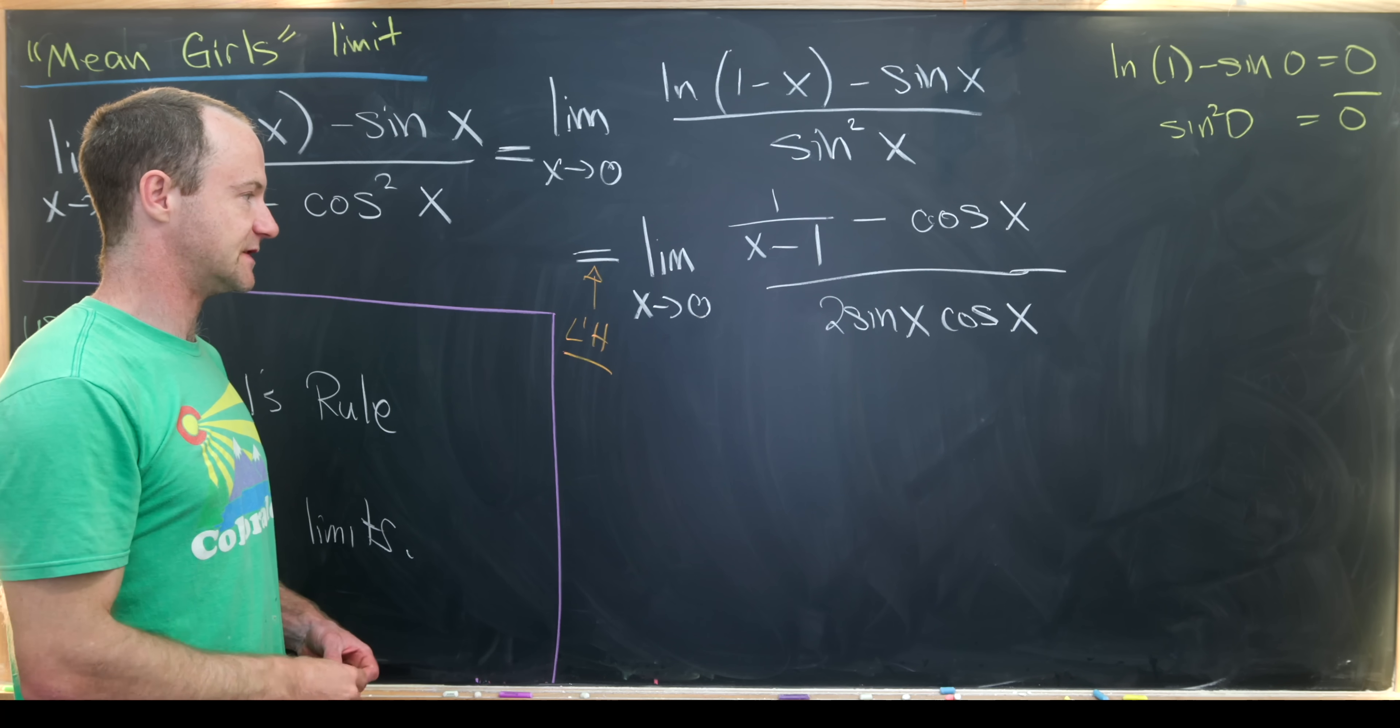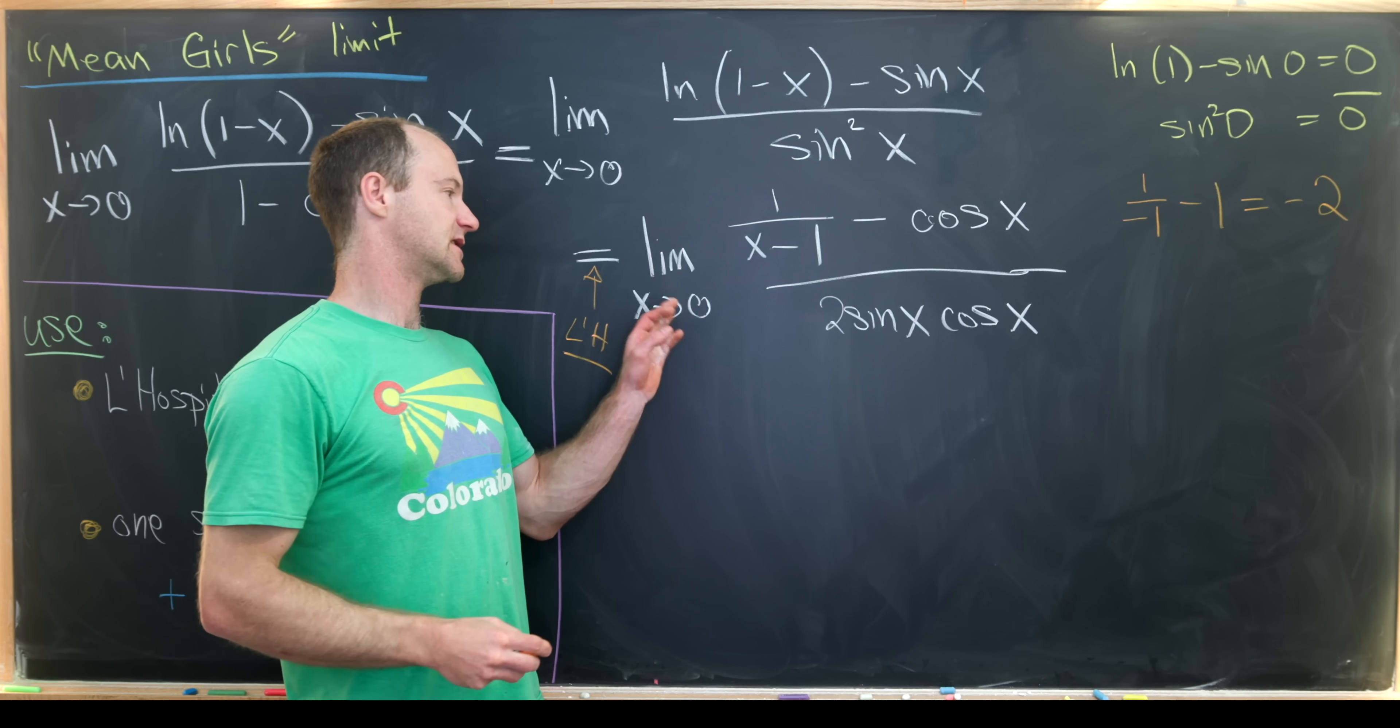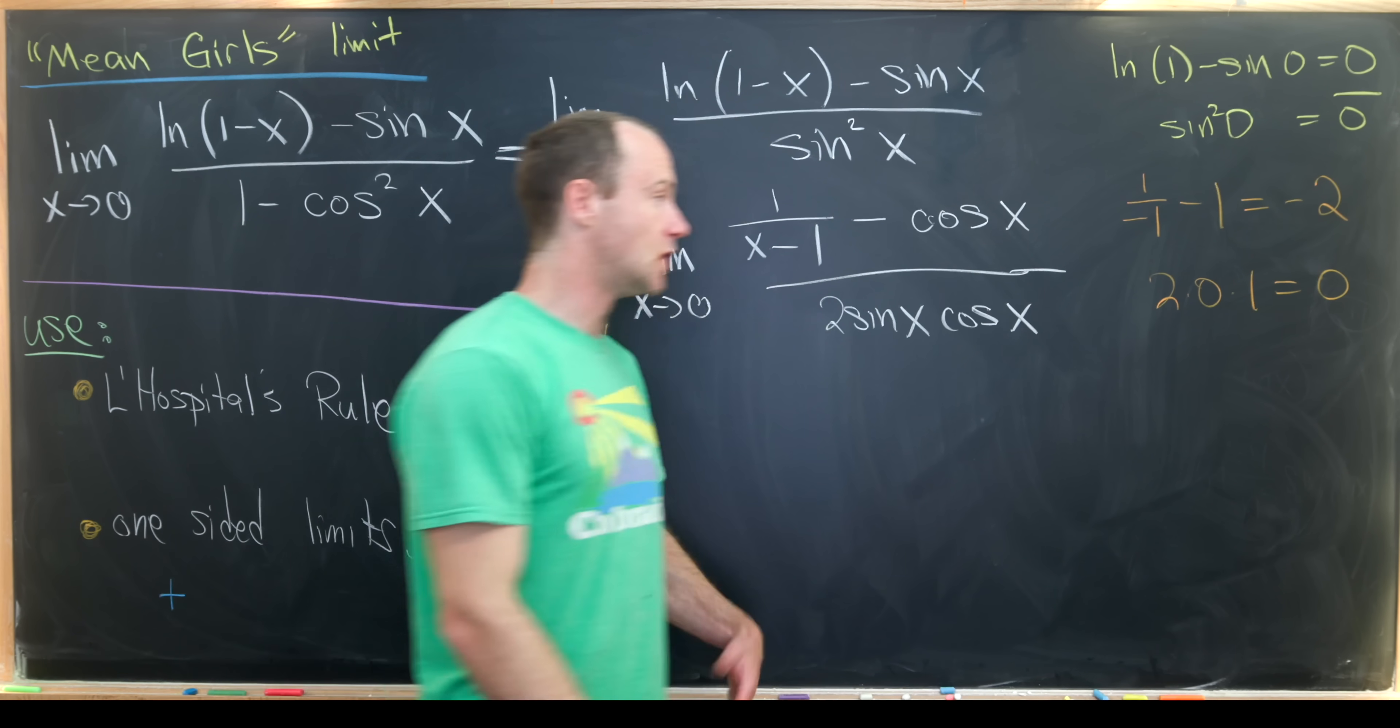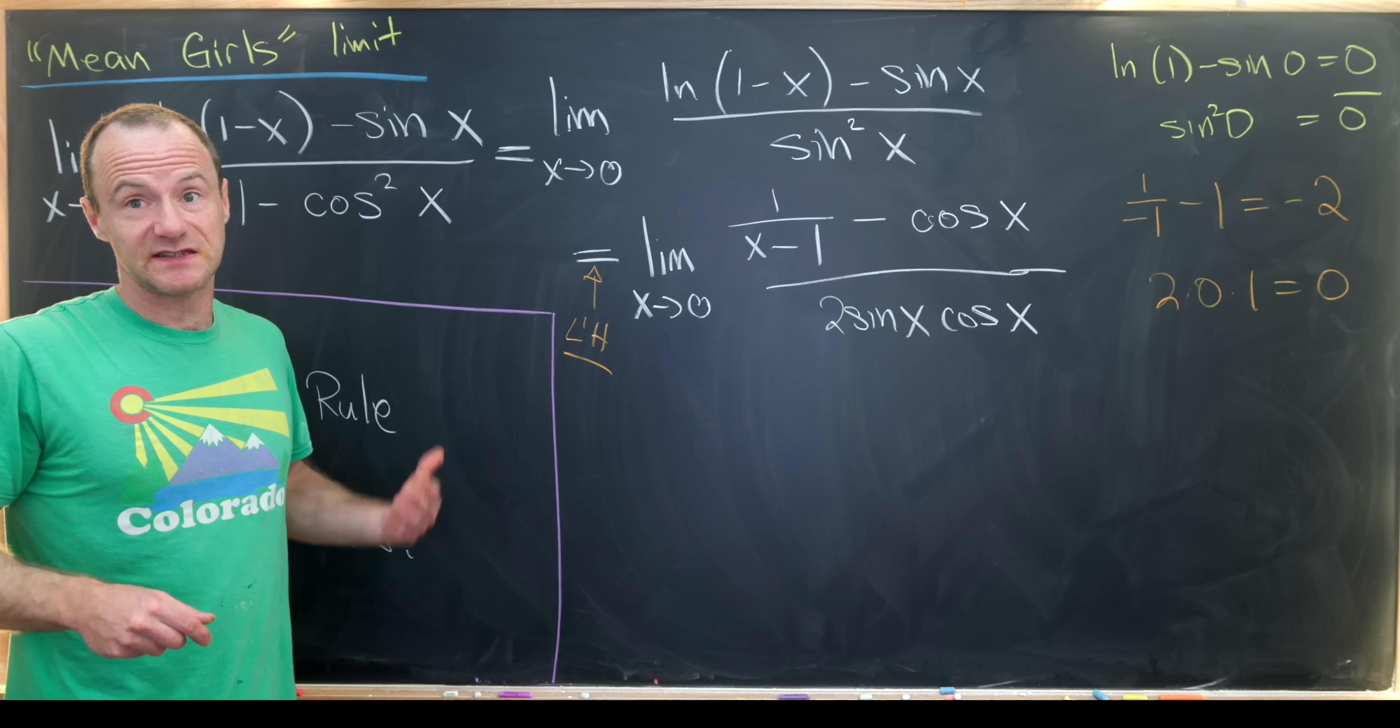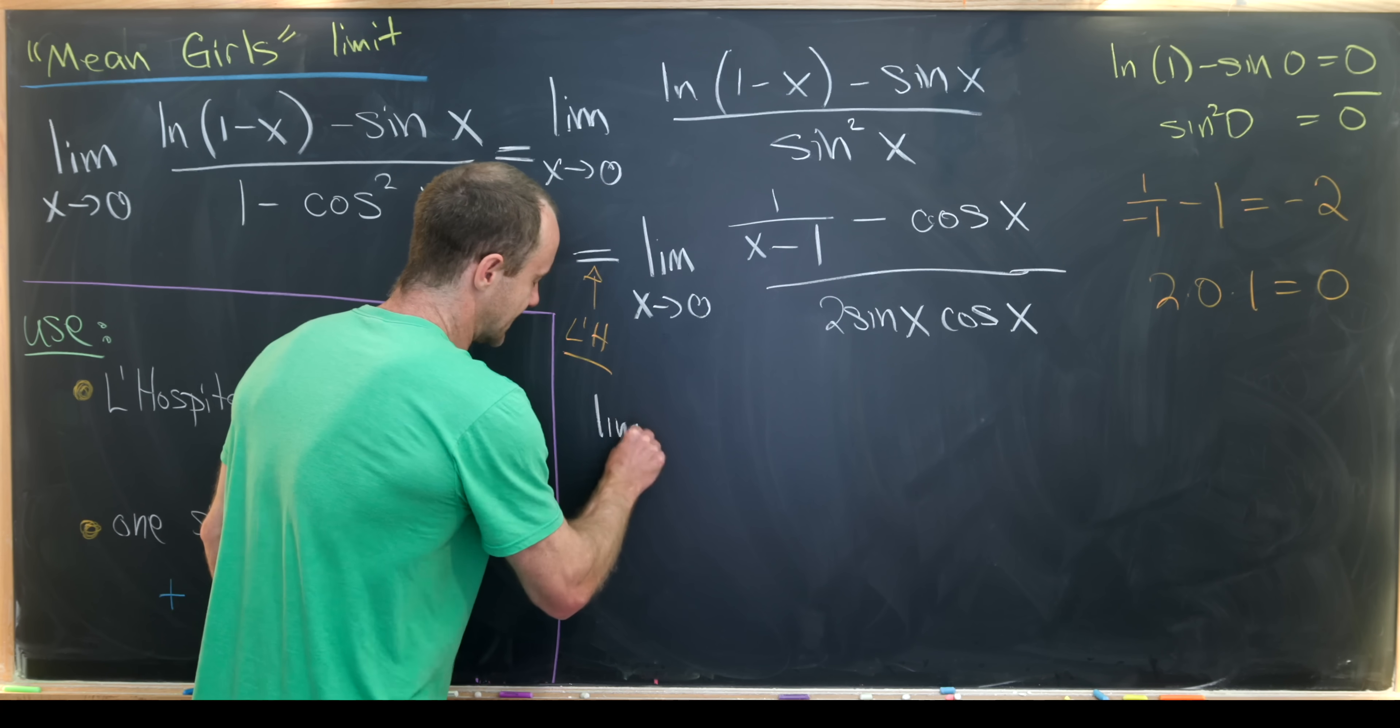Now let's see what happens. As x approaches 0 here, we get 1 over negative 1 minus 1, so that's negative 2 in the numerator. Then as x approaches 0 in the denominator, we get 2 times 0 times 1, so that'll be 0. So no longer do we have an indeterminate form. We've got a finite number over 0 situation, which motivates either this limit does not exist or it's infinite. But we'll show that it does not exist, which was the solution given in the movie, and we'll do that by taking one-sided limits.